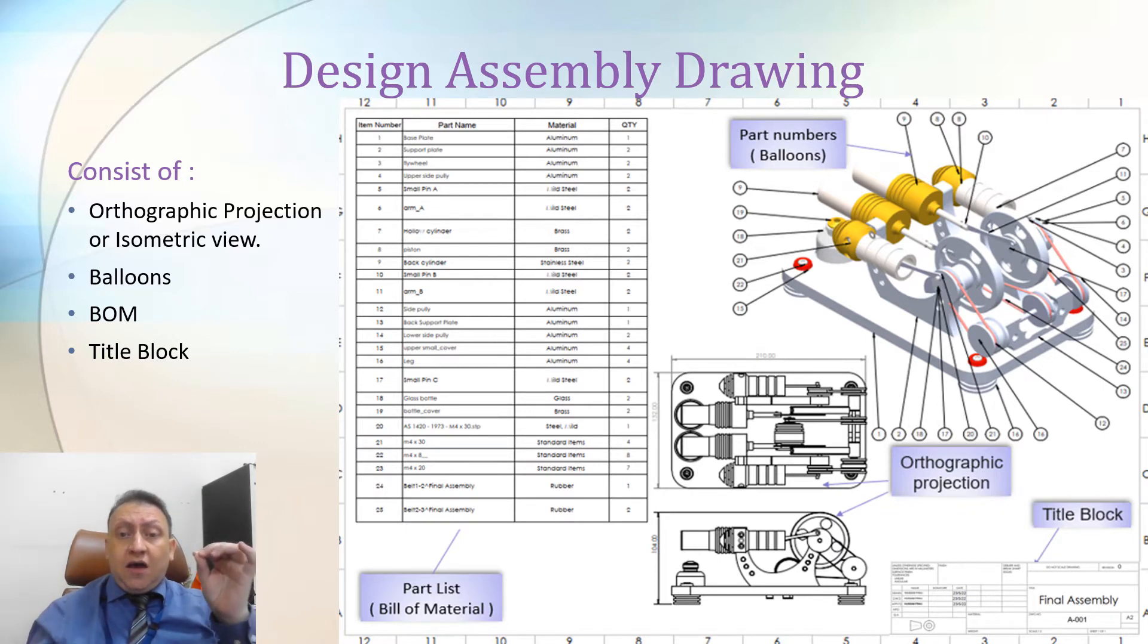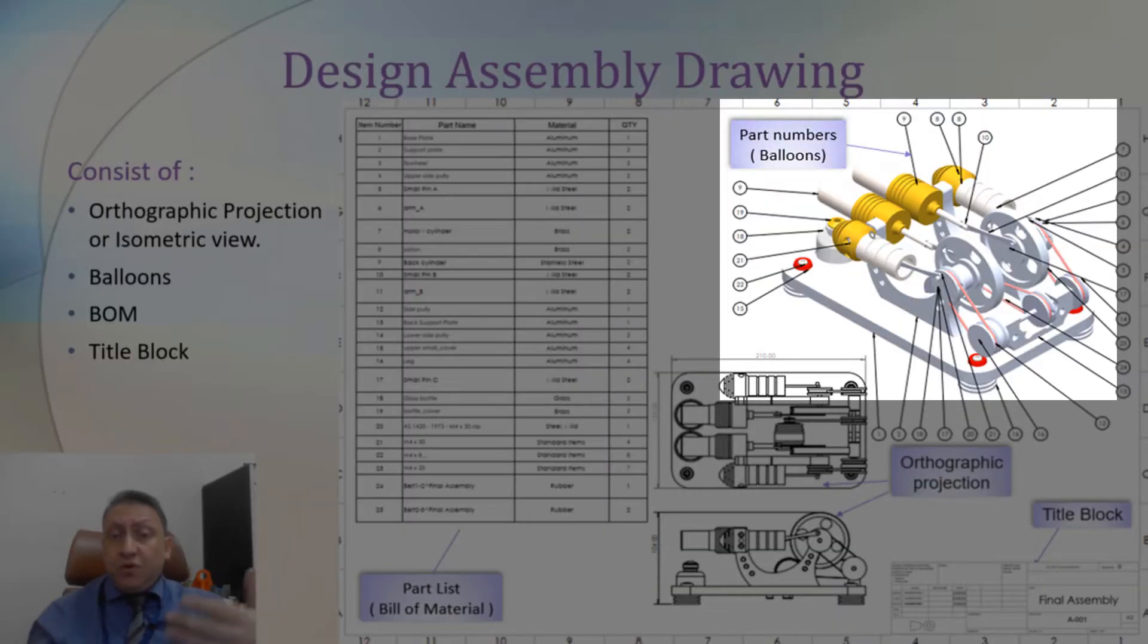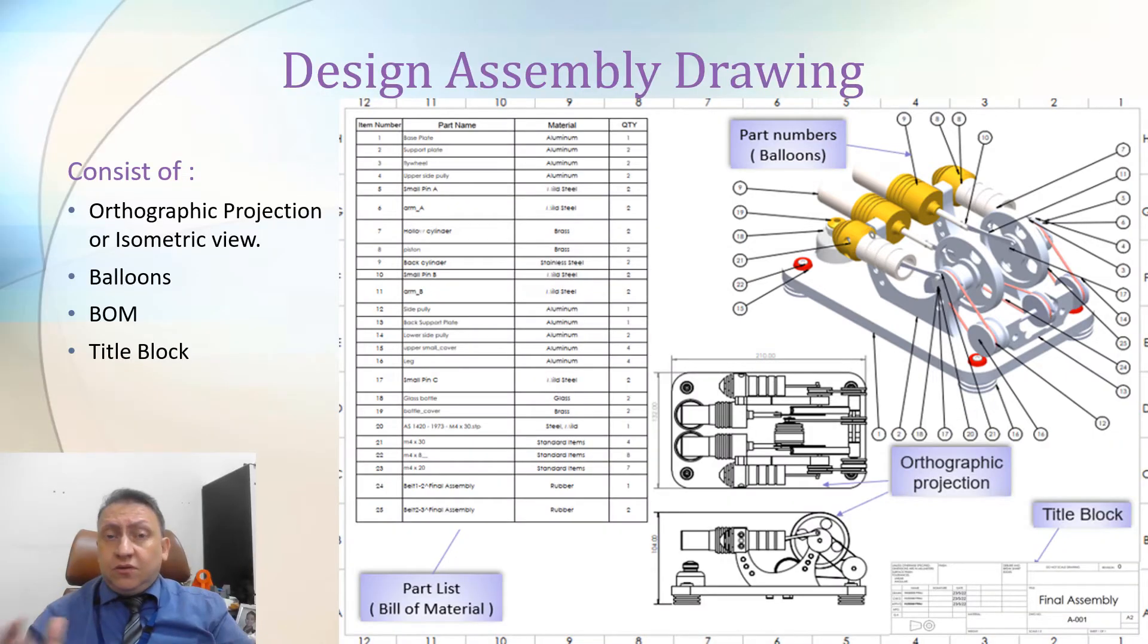We should have first the views. We should have either orthographic projection, like top view, front view, or the isometric view. With regard to dimension, not all the time we need dimension on the assembly drawing based on the drawing, based on the standard, based on the function of the part.